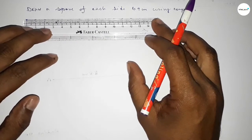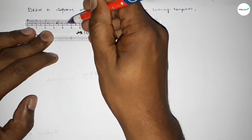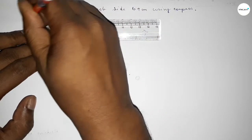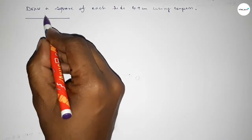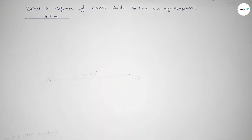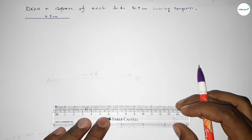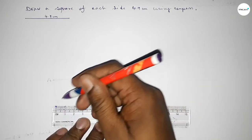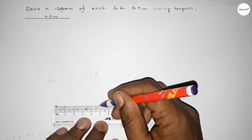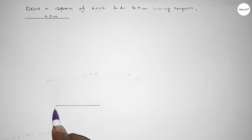First of all, we have to draw a line of length 4.9 centimeters — starting 0, 1, 2, 3, 4, 4.5, 6, 7, 8, 9 — so this is 4.9 centimeters. Now again we have to draw another line of length 4.9 centimeters — starting 0, 1, 2, 3, 4, 4.5, 6, 7, 8, 9 — so this is also 4.9 centimeters.